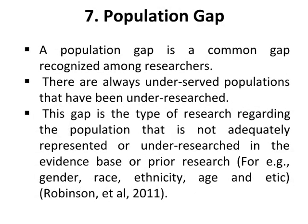Number seven is population gap. A population gap is a common gap recognised among researchers. There are always underserved populations that have been under-researched. This gap refers to research regarding populations that are not adequately represented in the evidence base or prior research — for example, gender, race, ethnicity, age. Robinson and Eyal, 2011.